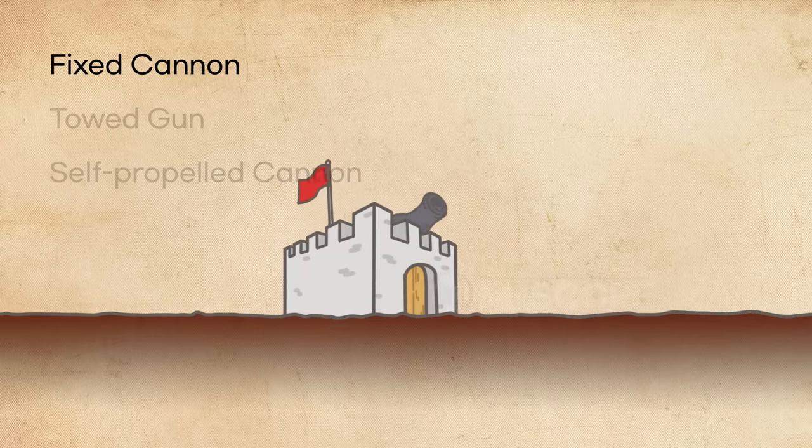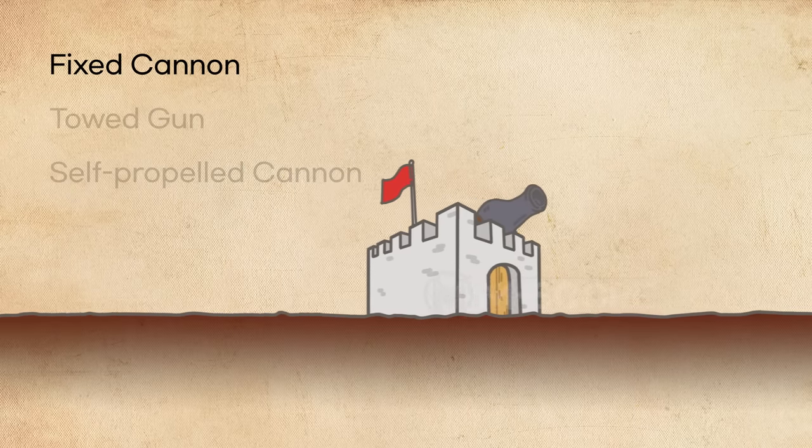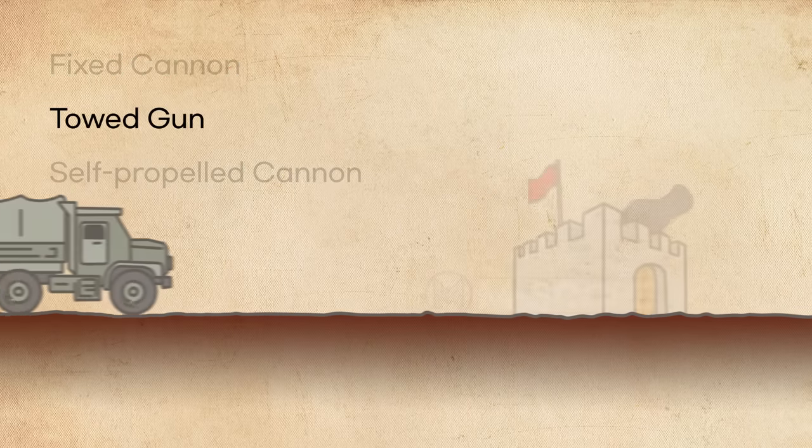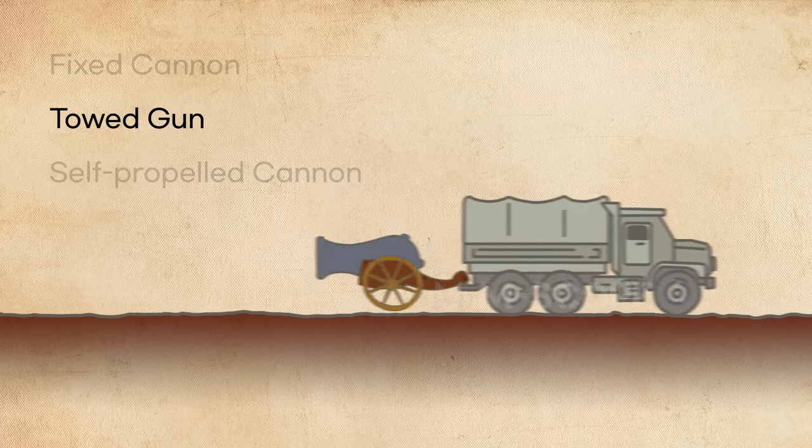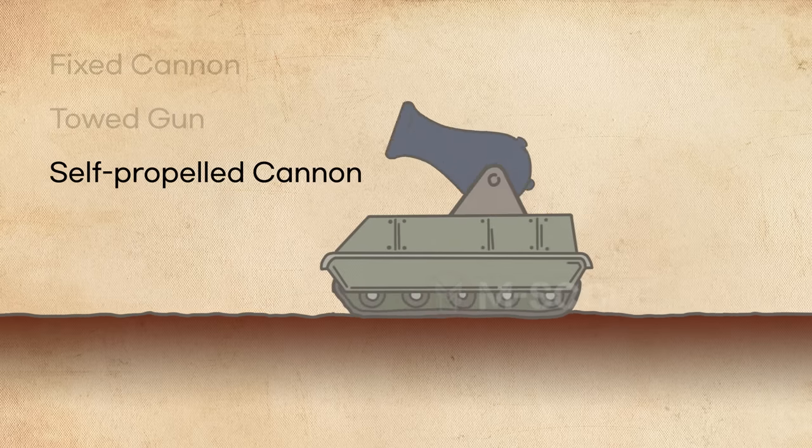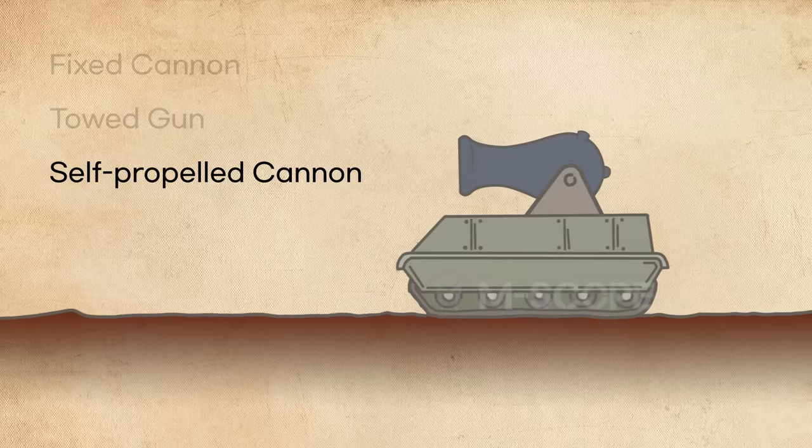A fixed cannon is installed to protect important facilities with its unmoving weaponry. A towed gun is a type of cannon that can be dragged by vehicles. A self-propelled cannon has its own power source within the cannon itself and can move on its own.